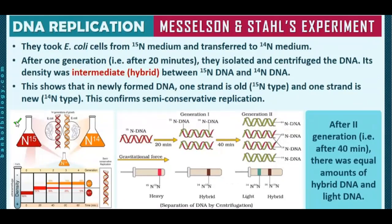They took the heavy N15 culture medium and put it into the normal N14 orange culture medium. They took E. coli cells from the N15 medium and transferred them to the N14 medium. After 20 minutes — after one generation — they isolated and centrifuged the DNA. They found that it was an intermediate hybrid between N15 DNA and N14 DNA — many of the DNAs were hybrid.